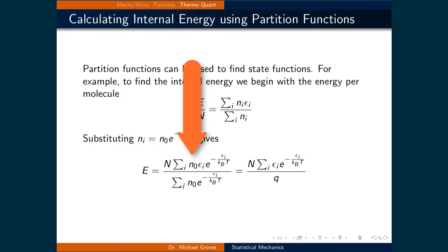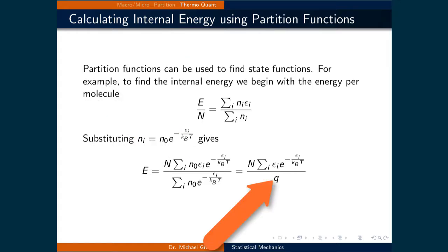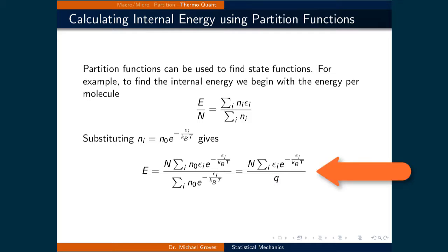We can divide out the n-naught terms, and the denominator is equal to the definition of the partition function Q. So we have a final expression: the energy is equal to N times the sum over i of e_i times the exponent of negative e_i over k_B T, divided by the partition function Q.